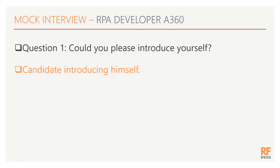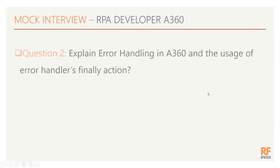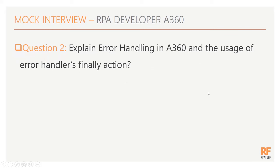Moving on to the next question — can you please explain error handling in A360, and more specifically, what is the use of the Finally action in the error handler package? So the error handler package is used when the bot fails in any abnormal situation or exception during execution. Without it, it is very difficult to identify what the error is, where it's coming from, and when it occurred.